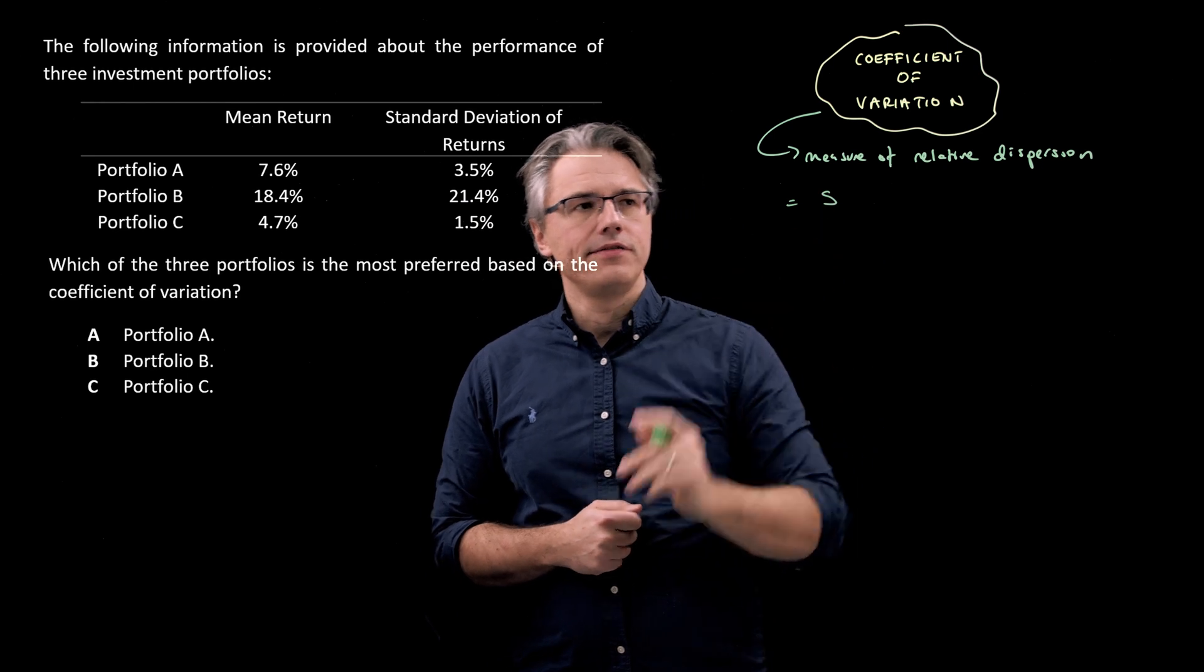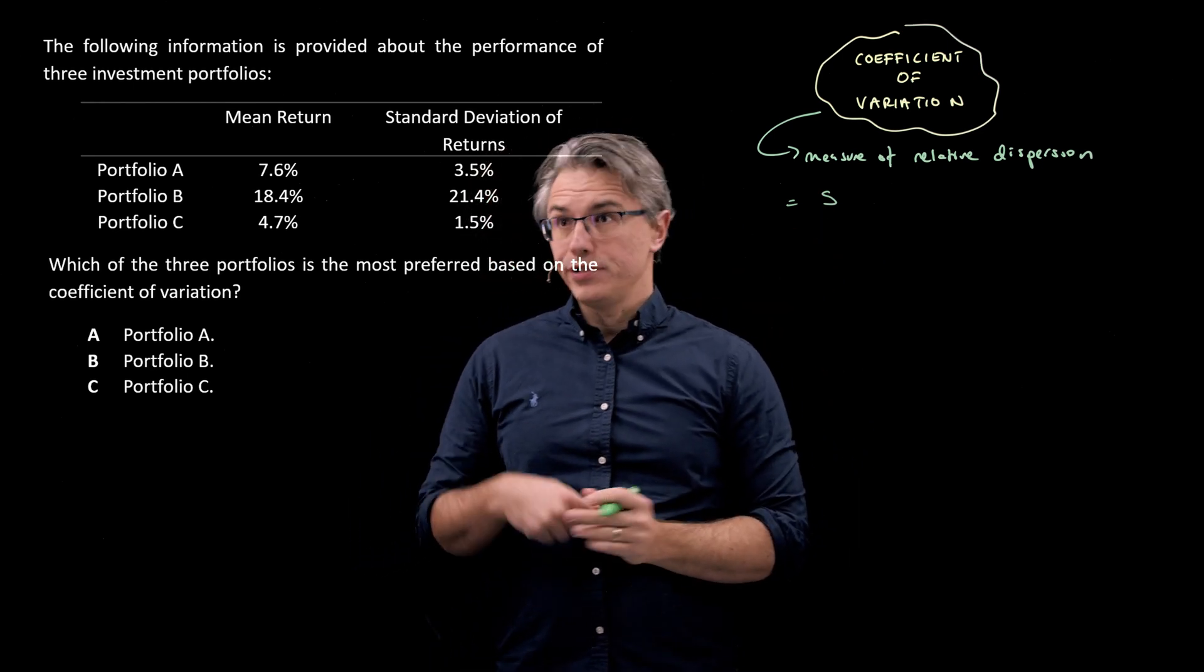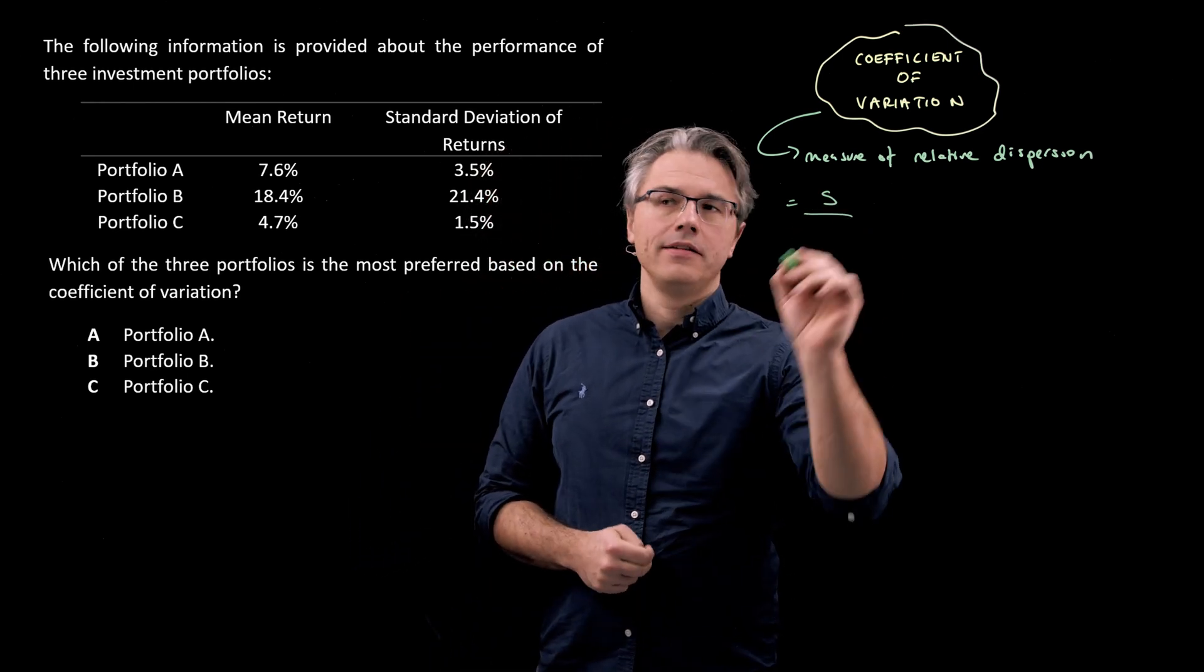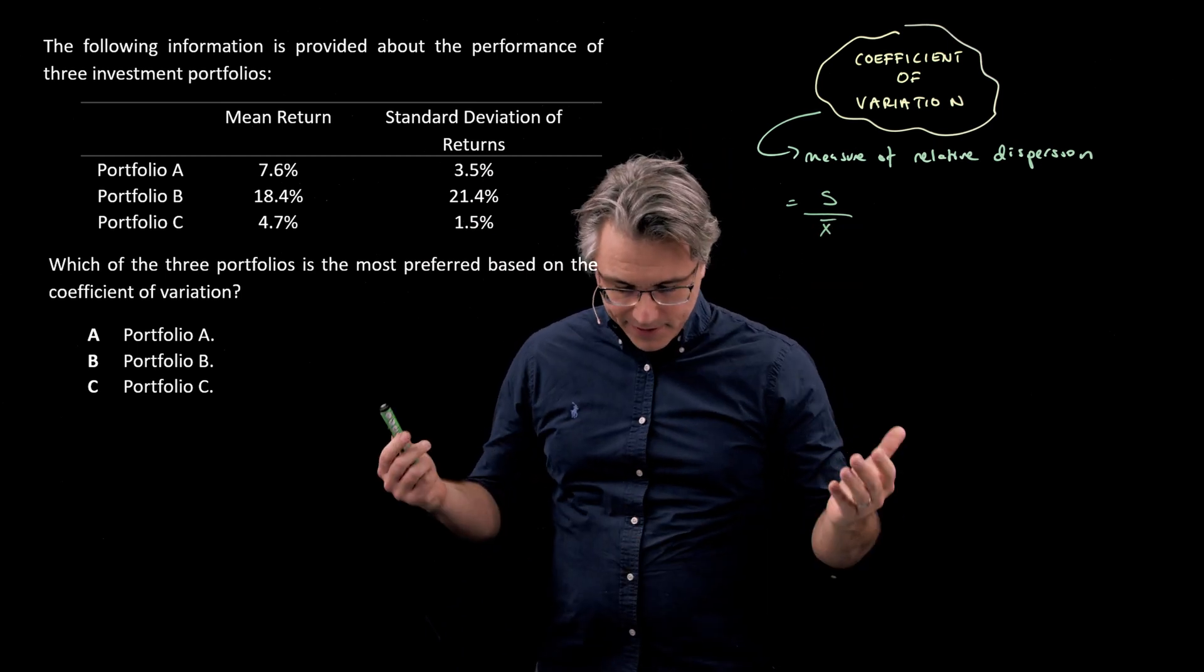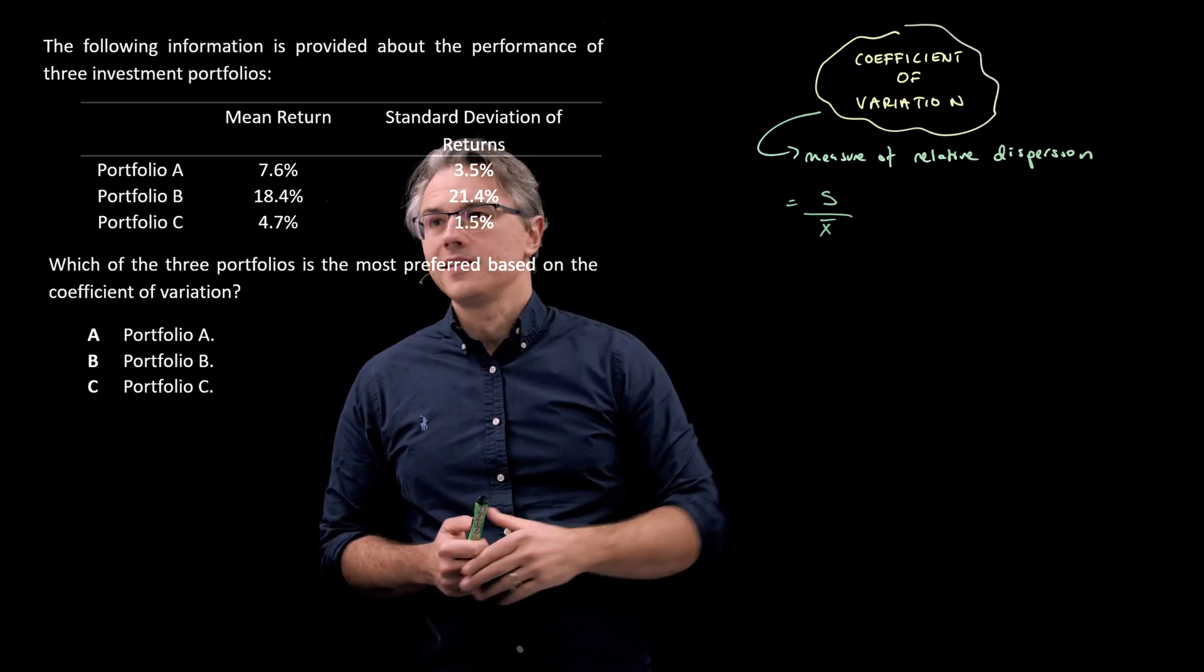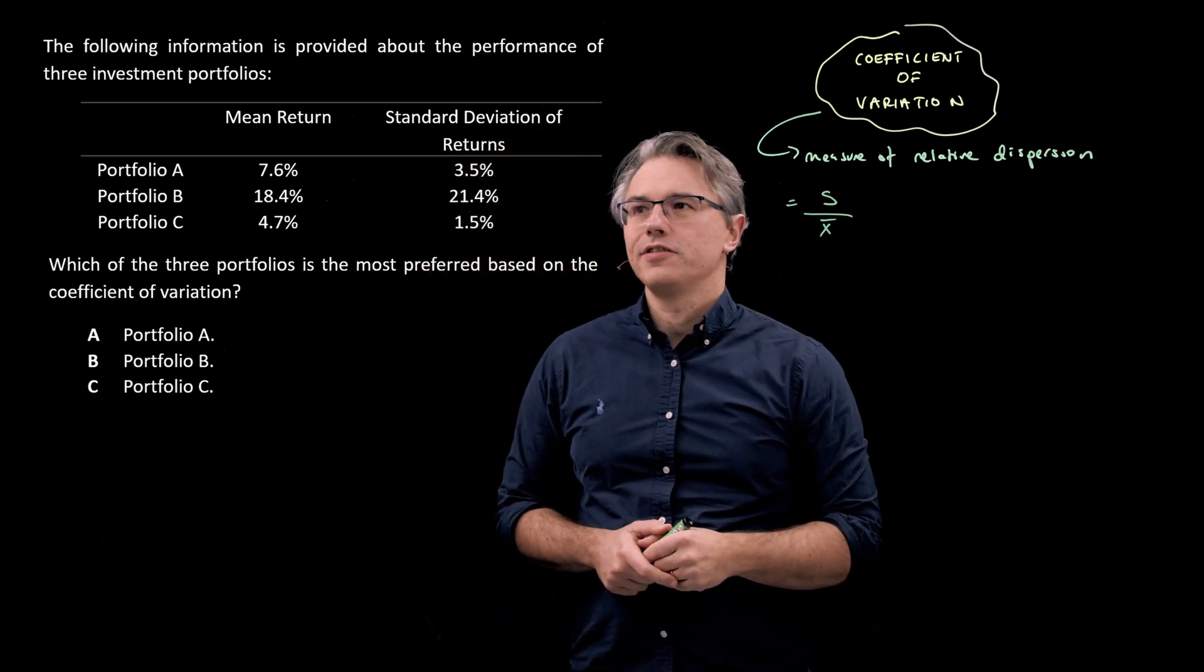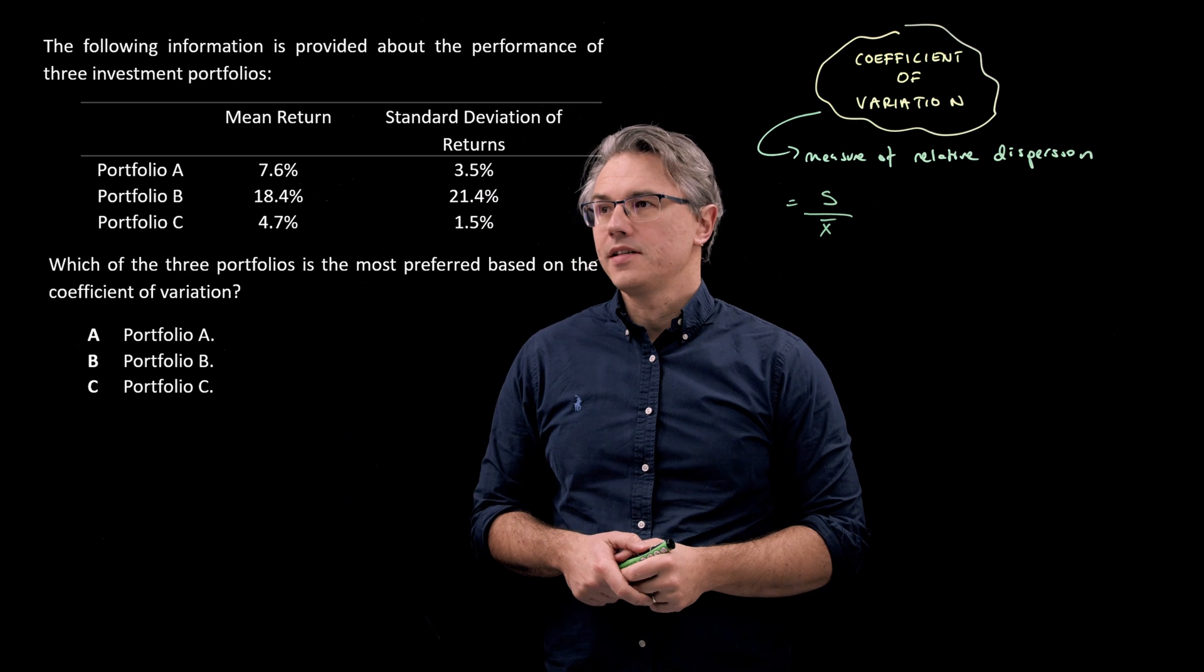We take the standard deviation of returns for a portfolio and divide by the mean return, so X bar. And that's as simple as that. S, the standard deviation of returns divided by the mean return, that's X bar.